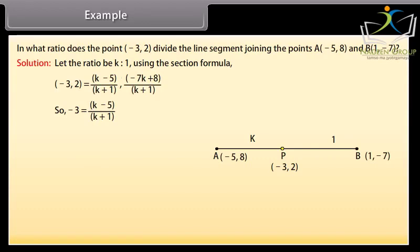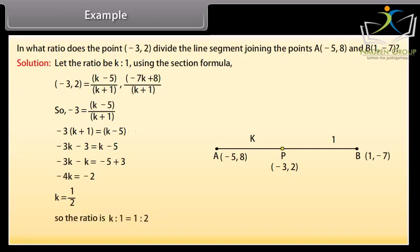Minus 3 into k plus 1 equals k minus 5 which is equal to minus 3k minus 3 equals k minus 5 equal to minus 3k minus k equals minus 5 plus 3 is equal to minus 4k equals minus 2. So, the ratio is k is to 1 is equal to 1 is to 2.